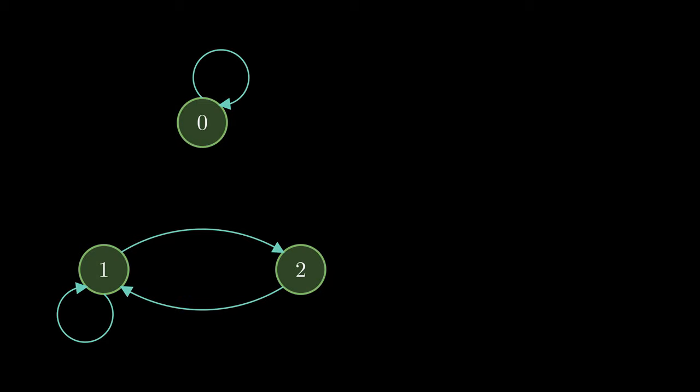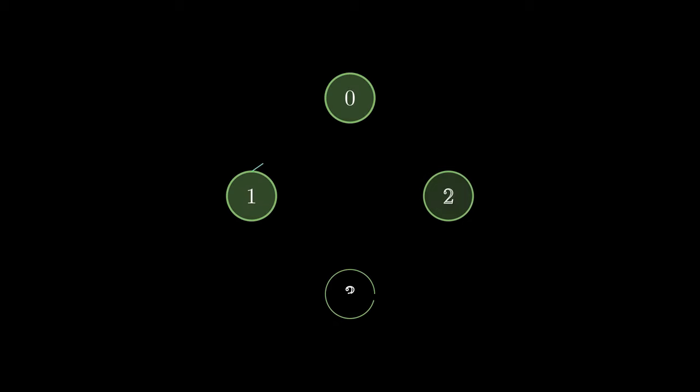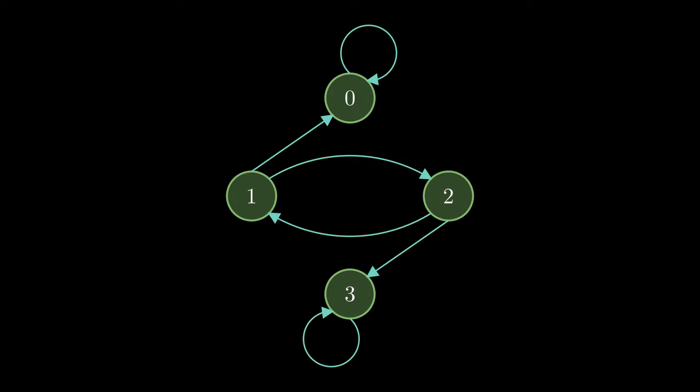Now I'm gonna take a slightly bigger Markov chain. Some of you might be familiar with this, it's famously known as the gambler's ruin. But let's not get overwhelmed by the name, just consider this as a regular Markov chain.